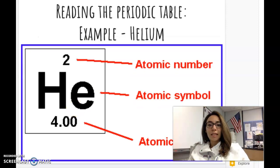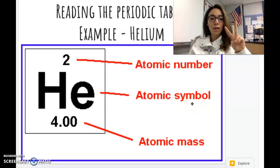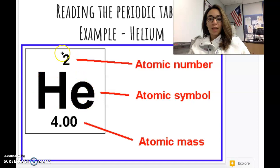Now let's learn how to read the periodic table. So when you look at the periodic table, there will be a square for each element. In the middle of the square is the atomic symbol. Usually this is one or two letters that represents the name of the element. The top number is the atomic number, and the bottom number is the atomic mass.